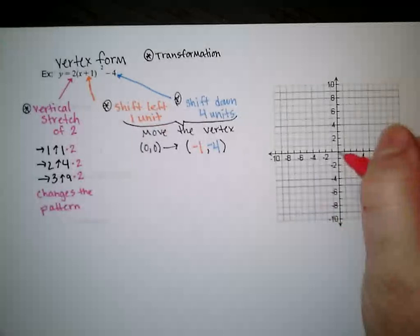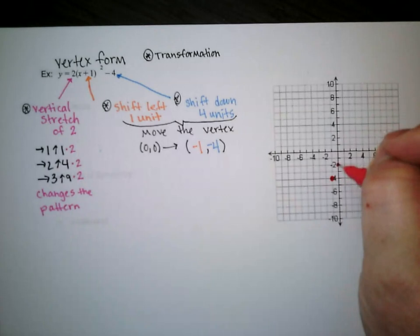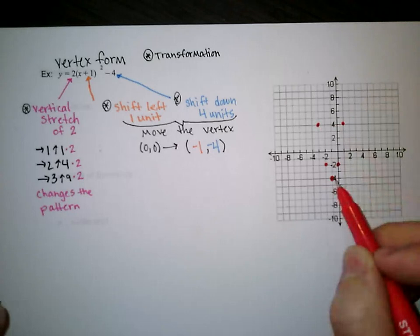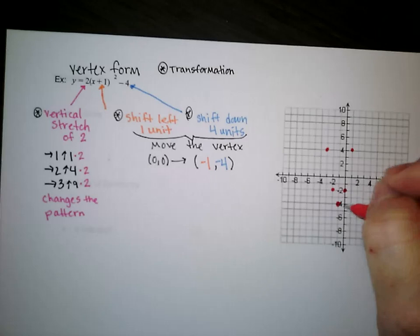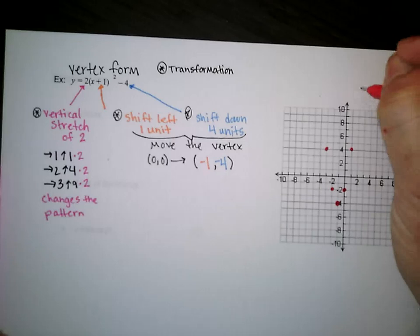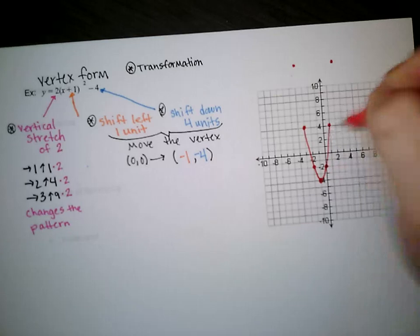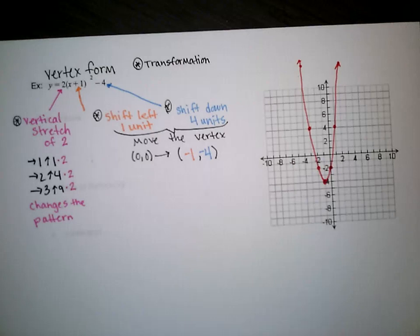I'm going to use the pattern to graph. I will go over 1, up 2; over 1, up 2 on the other side as well. Then over 2, up 8 — starting back from the vertex each time. Then over 3, up 18, which is up high on the graph. We connect these dots in a smooth curve, not pointy. We always want to draw off the graph paper provided so you can tell the parabola keeps going — we wouldn't want to just stop at those dots.